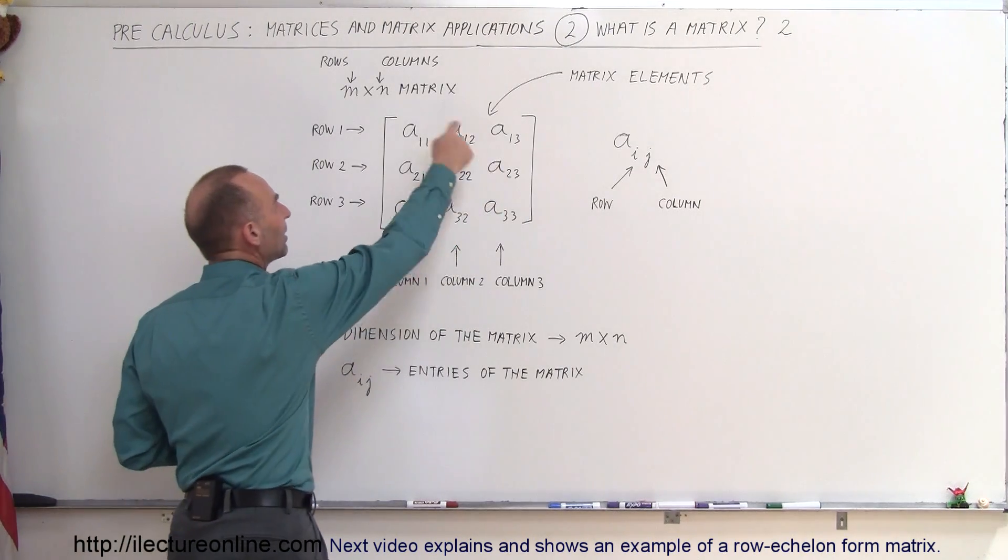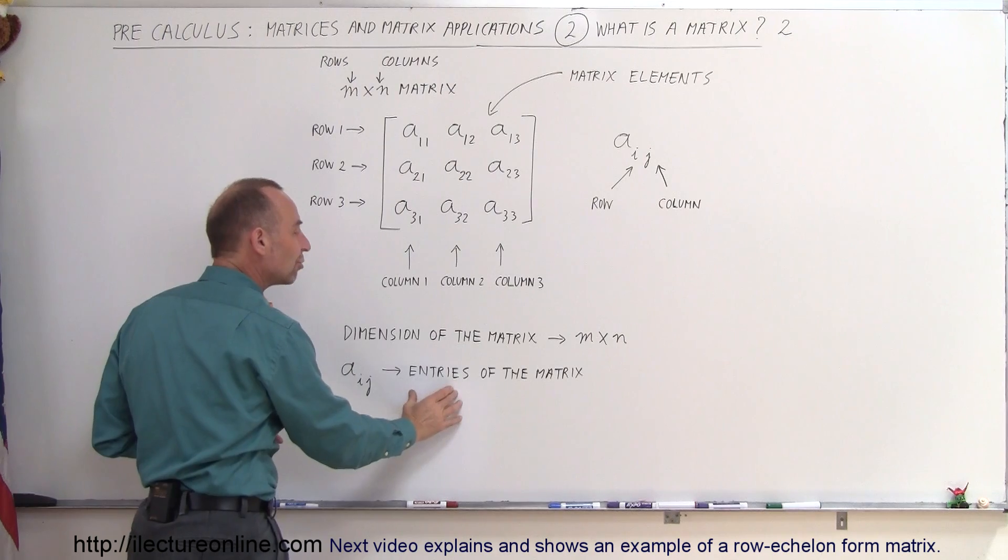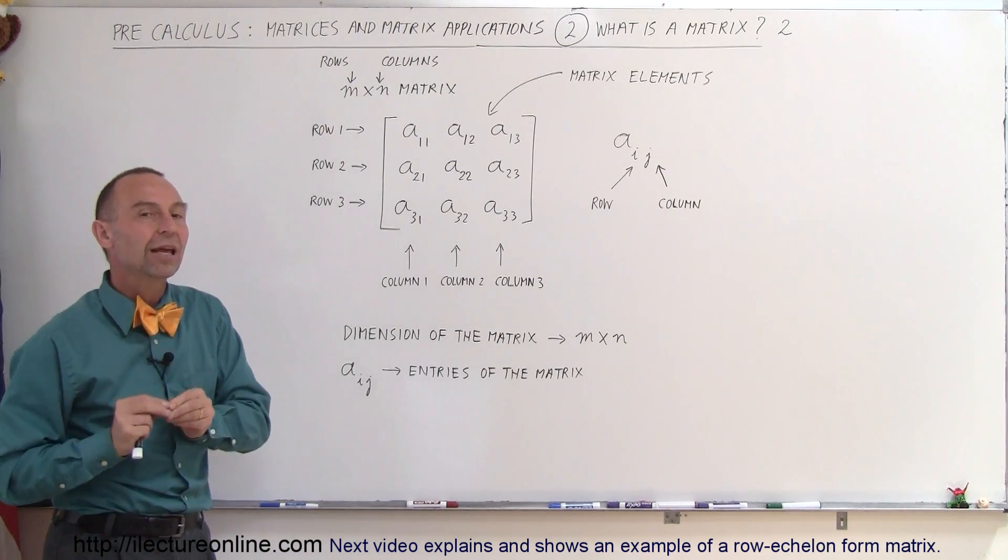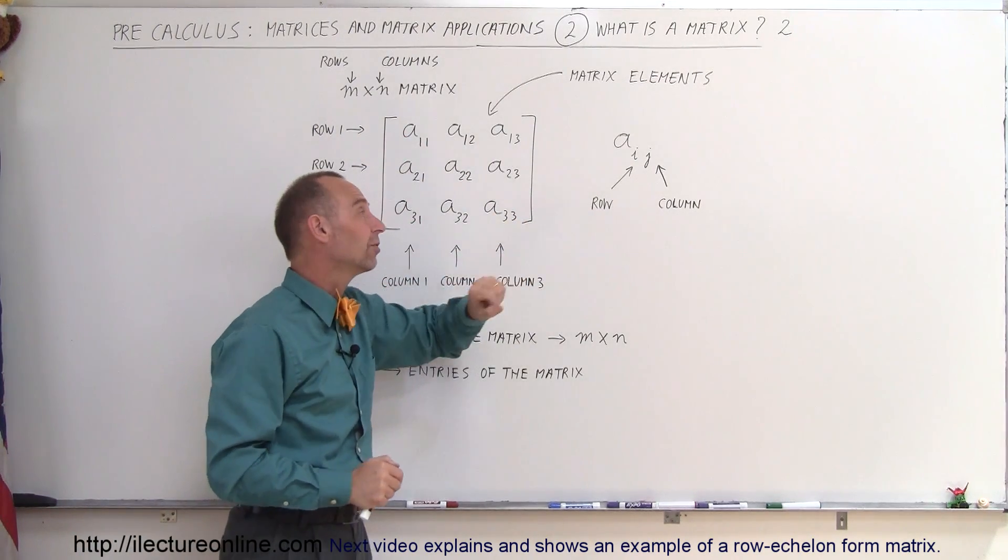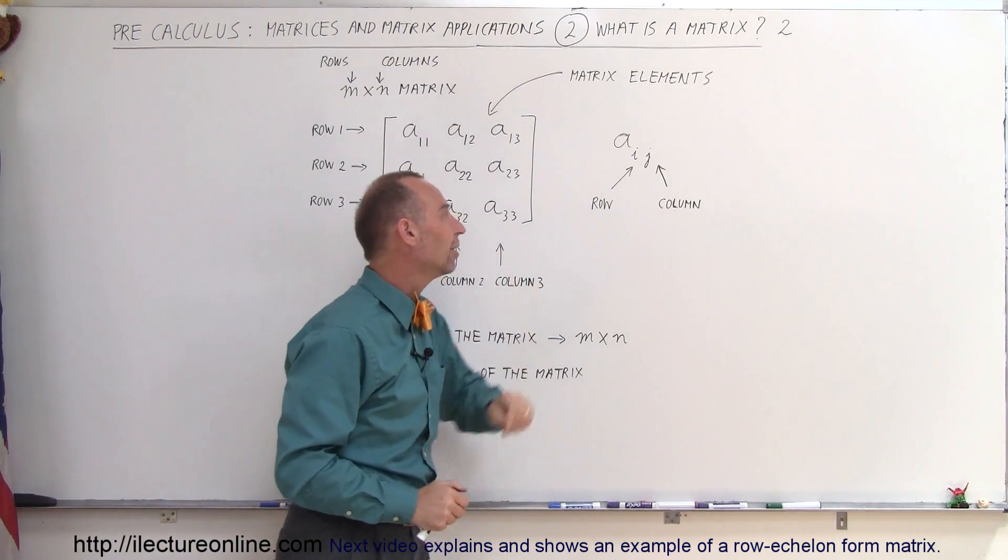The numbers inside here are either called elements, matrix elements, or we also call them entries of the matrix. Notice the subscripts tell you which element it is. The first number in the subscript represents what row the element is in; the second number represents what column it is in.